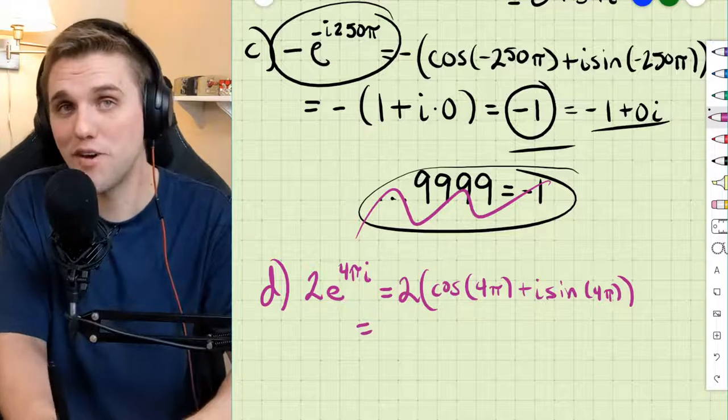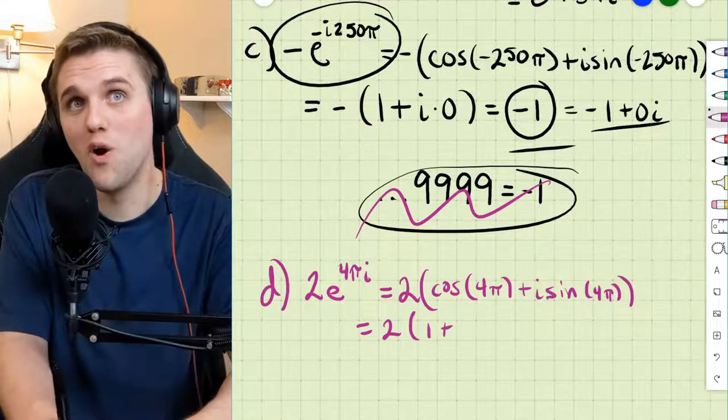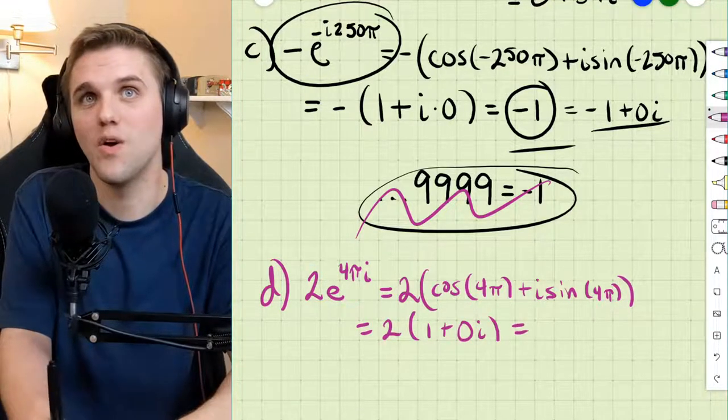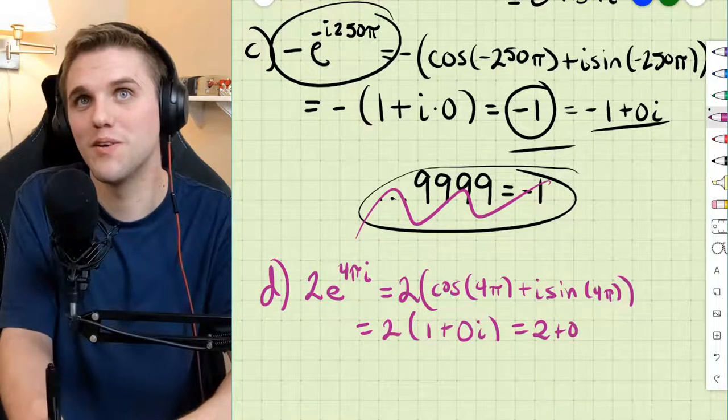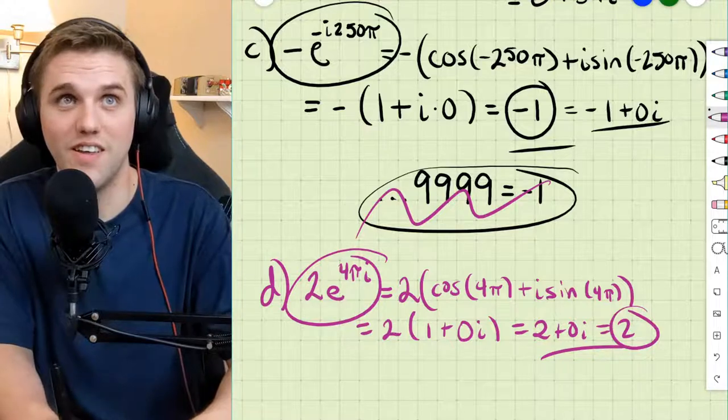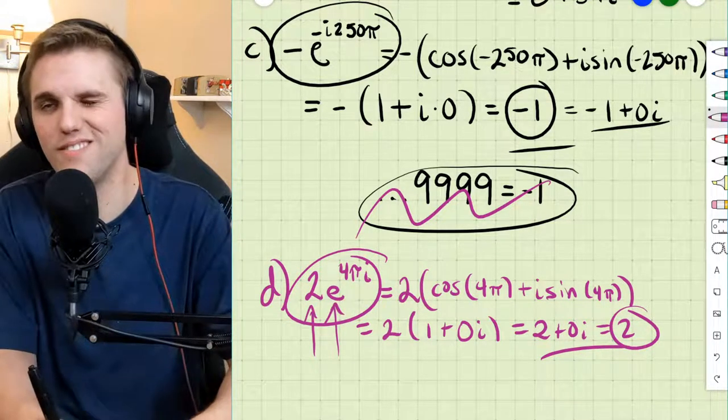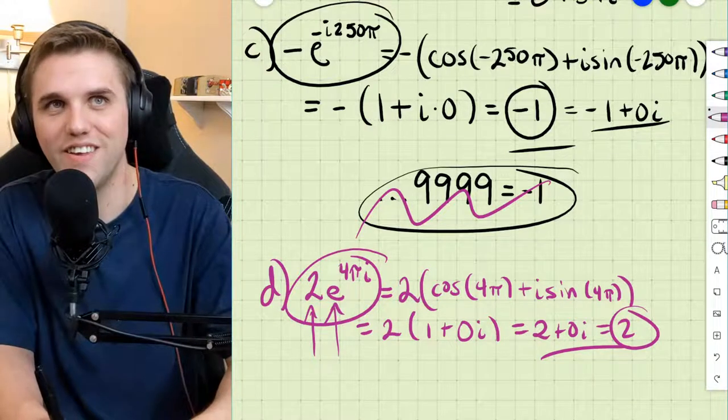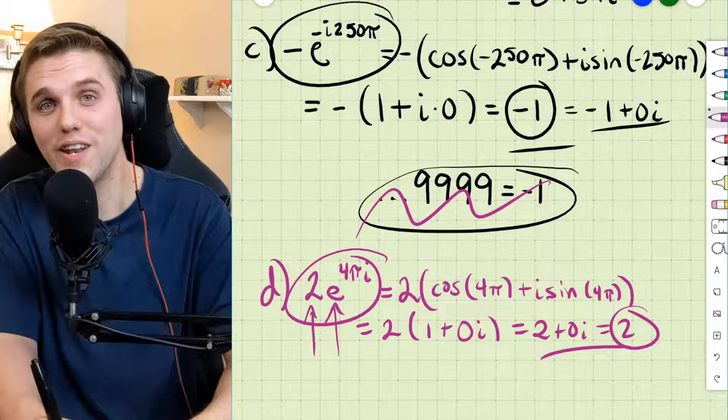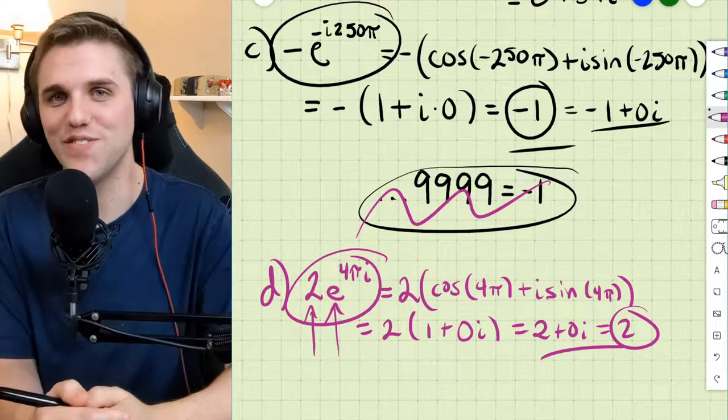And simplifying, we get 2 times 1 plus 0i. Which is just 2 plus 0i. It's an interesting way of writing 2. Which is 2 times some number. That number would have to be 1. So e^(4πi) is 1. Anyways, that finishes this problem. Thanks everyone and I'll see you in the next video.